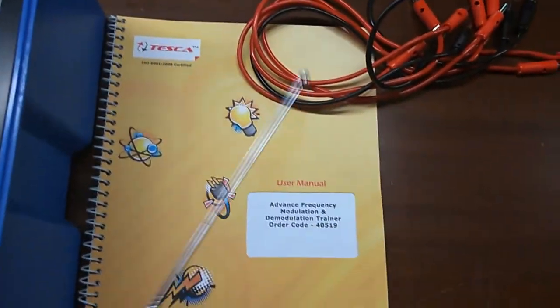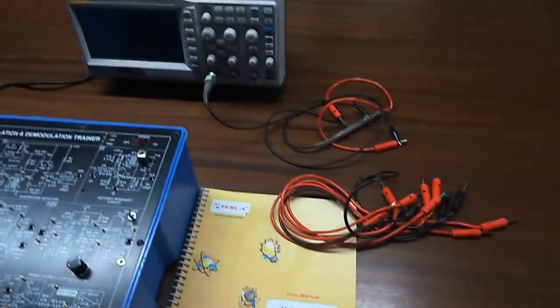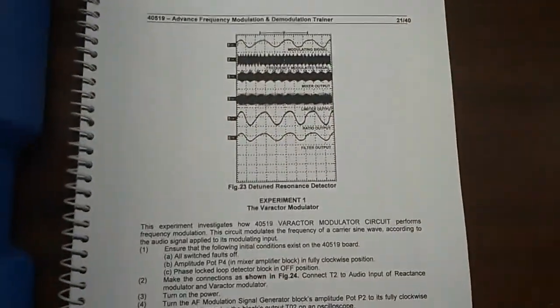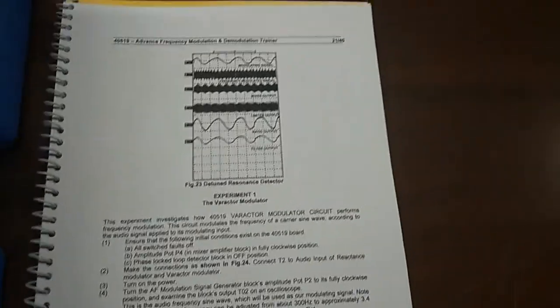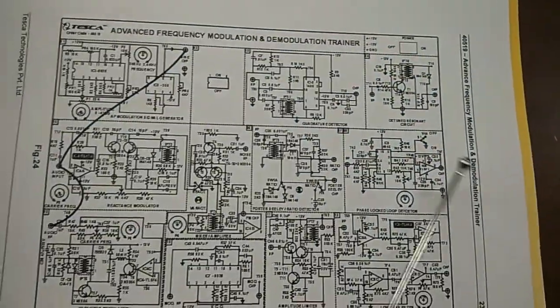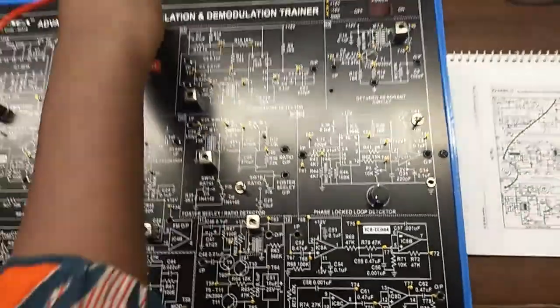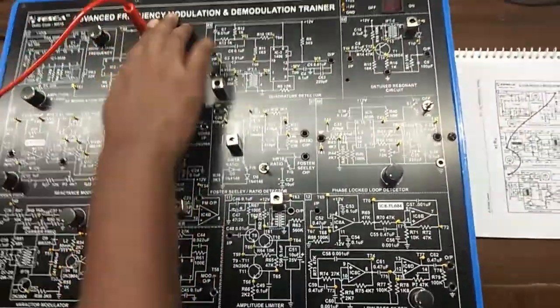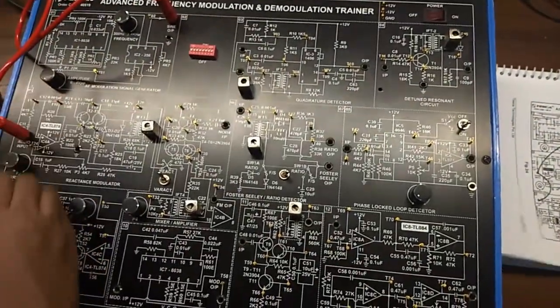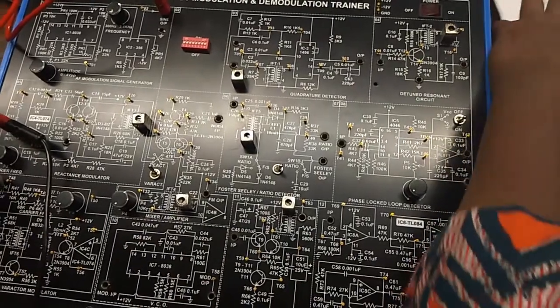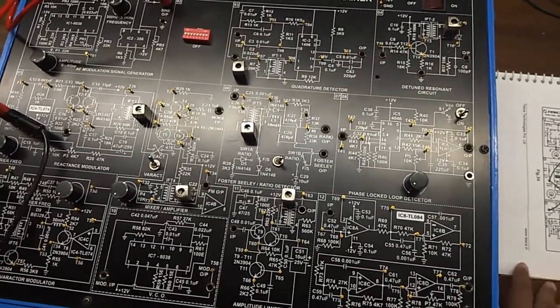Also, a user manual and course are included. To do this experiment we will need a CRO or DSO to observe the output waveform. Our first experiment is the varactor modulator. The procedures are given step by step and this is the connection that we need to make to perform this experiment. First, connect the sine output to the audio input and this to the audio input of the varactor modulator. Now we will check the output waveform.